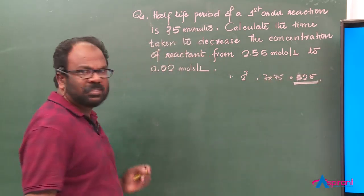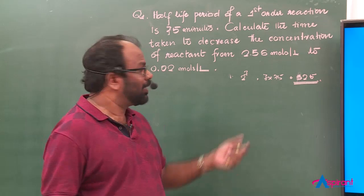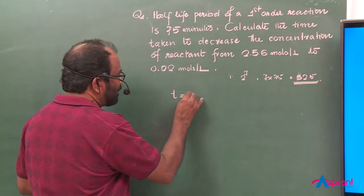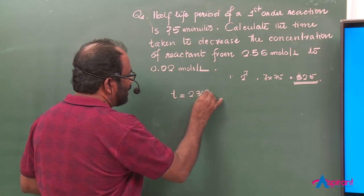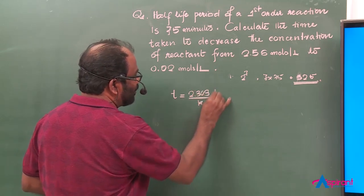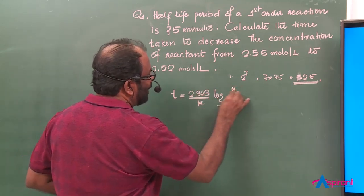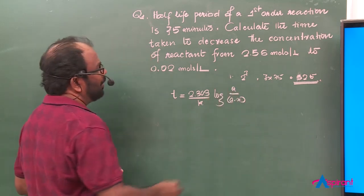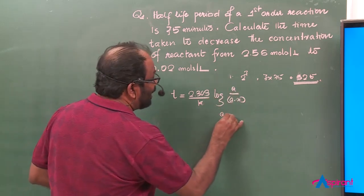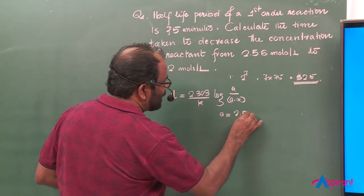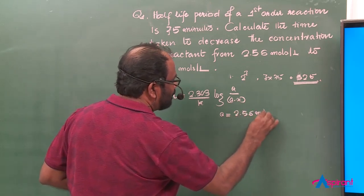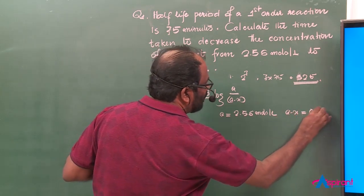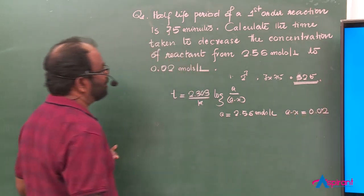The answer is 525 minutes. Using the first order reaction rate equation: T equals 2.303 divided by K, into log A divided by (A minus X). Here, the initial concentration A equals 2.56 moles per liter, and the final concentration (A minus X) equals 0.02 moles per liter.